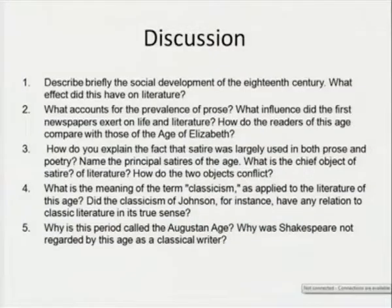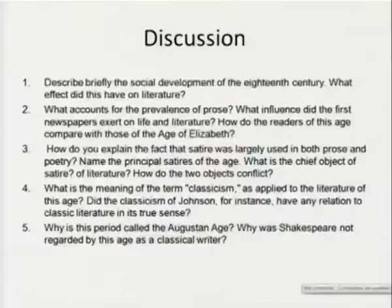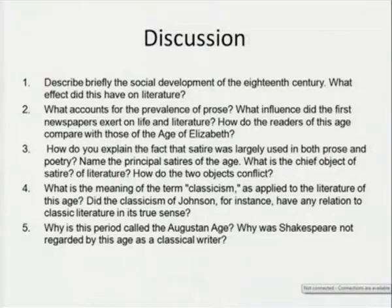When you do the different stages of English history, especially the history of English literature, you would have to see the different genres that became very prominent during these ages. How do you explain the fact that satire was largely based in both prose and poetry? Name the principal satires of the age, whether in drama, in poetry, or in prose. What is the meaning of the term classicism as applied to the literature of this age? Did the classicism of Johnson, for instance, have any relation to classic literature in its true sense? You have to go and explore how the classic literature of the Latin period of Augustus had the same elements of decorum, elegance of prose, and the system of writing.